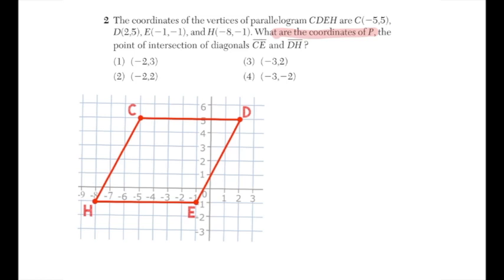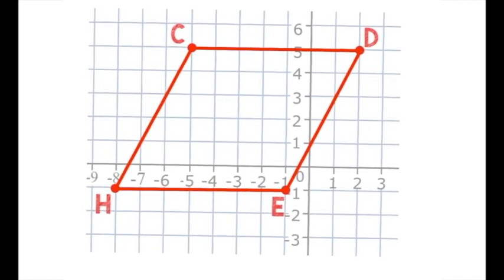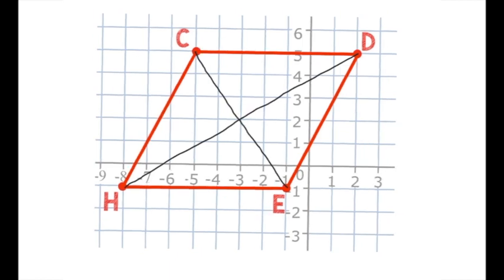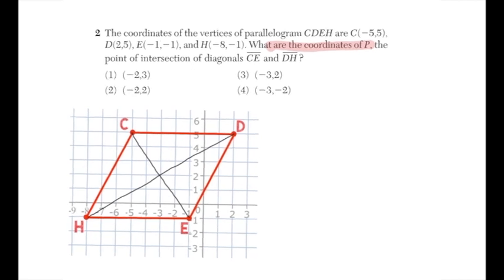Drawing a line from C to E and from H to D, the point of intersection appears to be negative three comma two. Now we'll apply the midpoint formula to confirm that answer.